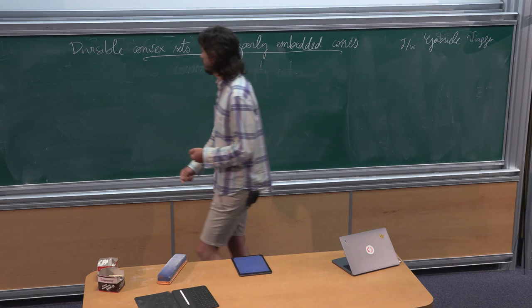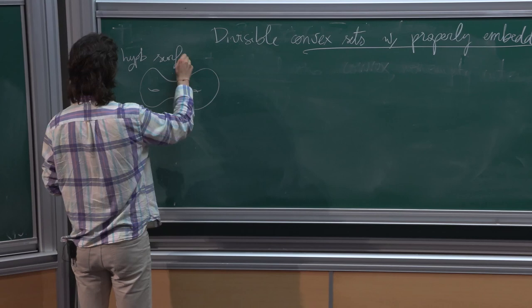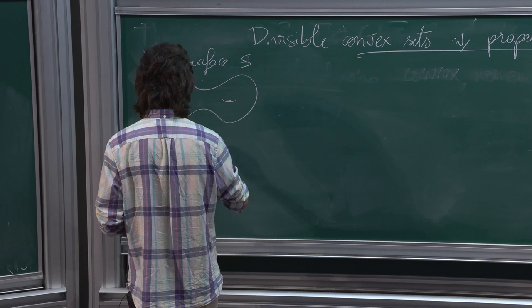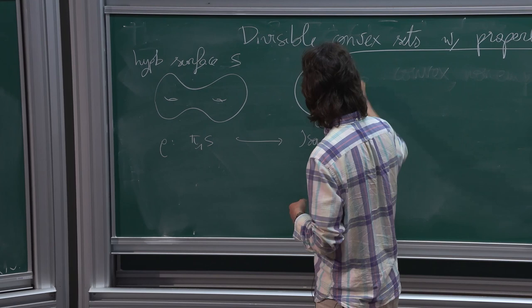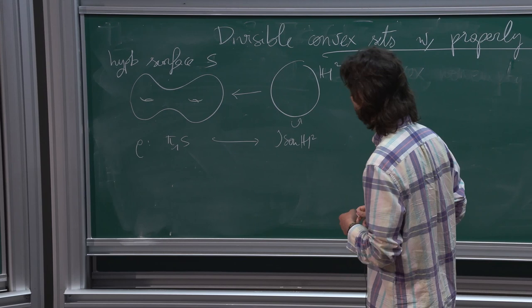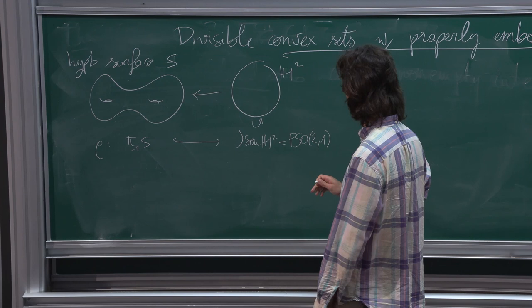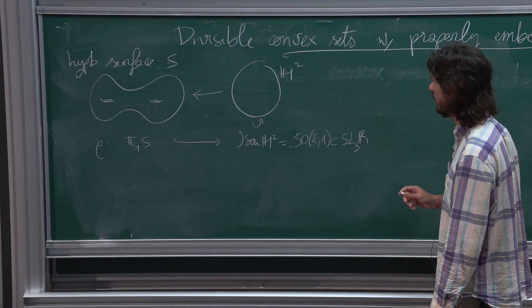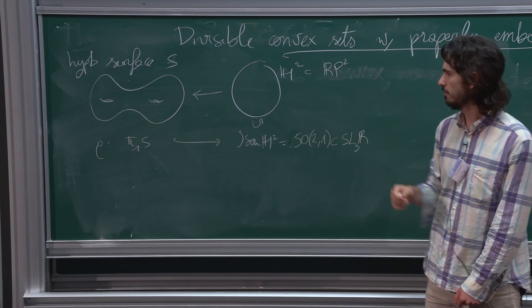I start with a hyperbolic surface, which comes with the hyperbolic structure and yields a holonomy representation from the fundamental group of S into the group of isometries of H², which is the universal cover of S. We identify the group of isometries of H² with PSO(2,1), which we see inside SL(3,R). And we see H² as a subset of RP², as a disk in the affine chart of RP². This is also called the Klein model or projective model of hyperbolic geometry — the Poincaré disk.